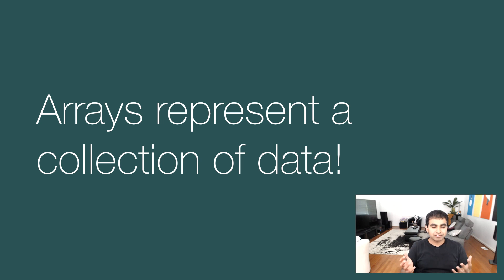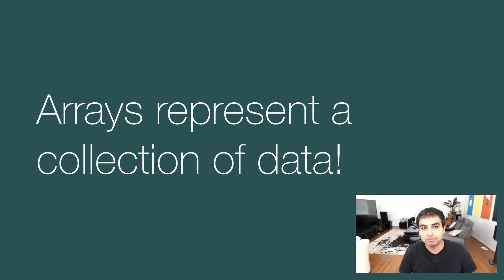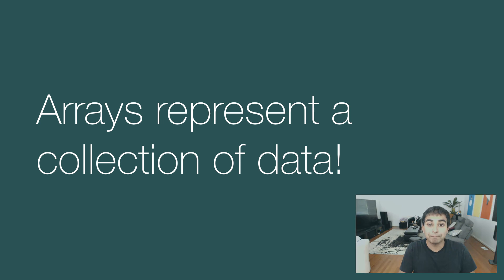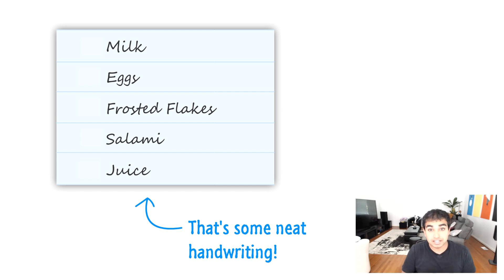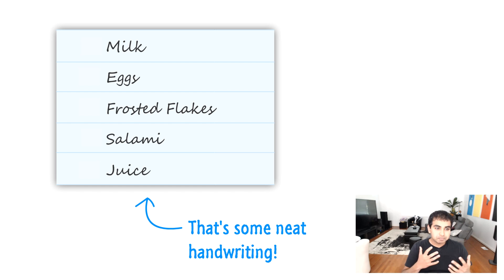At a very high level, an array is just something that allows you to store a collection of data. We looked at variables where we could store one item, one number, one piece of text. But with arrays, you can actually store many pieces of text. So let's imagine this: we have a grocery list with five items — milk, eggs, frosted flakes (the greatest cereal in the world, don't let anyone tell you otherwise), salami, and juice. And we want to have an easy way of representing this in JavaScript.